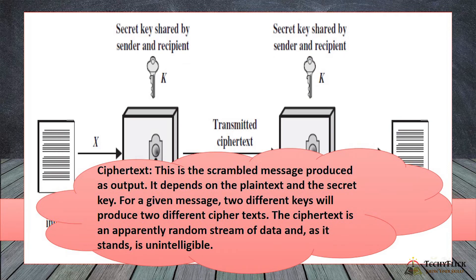Ciphertext: This is the scrambled message produced as output. It depends on the plain text and the secret key. For a given message, two different keys will produce two different ciphertexts. The ciphertext is an apparently random stream of data and is unintelligible. For example, if the plain text message is 'Hi', using different key values will produce different ciphertexts.